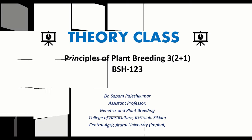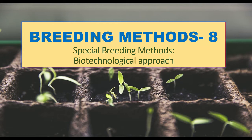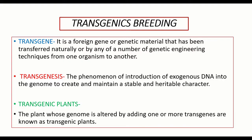Hello students, welcome to the theory class of Principles of Plant Breeding. Today we'll discuss Breeding Methods Part 8, covering special breeding methods. We have already covered mutation breeding and polyploidy breeding, which are applicable to all three types of crop plants. In this section, we'll cover methods common to all three types - self, cross, and asexually propagated crop plants - including transgenic breeding, somatic hybridization, genome mapping and sequencing, which are all biotechnological approaches.